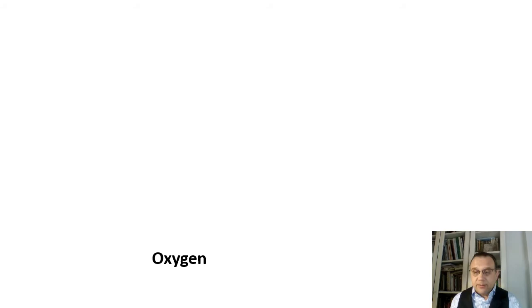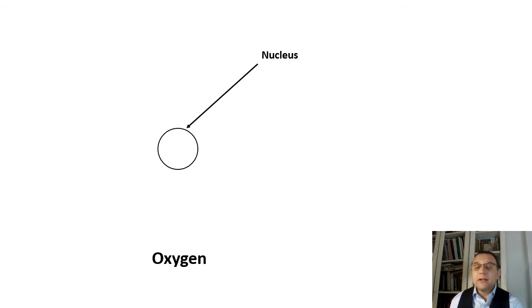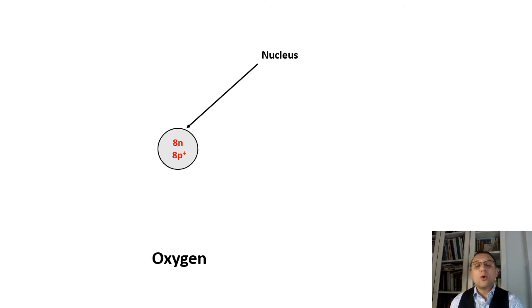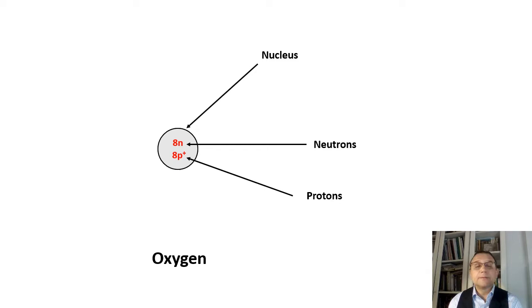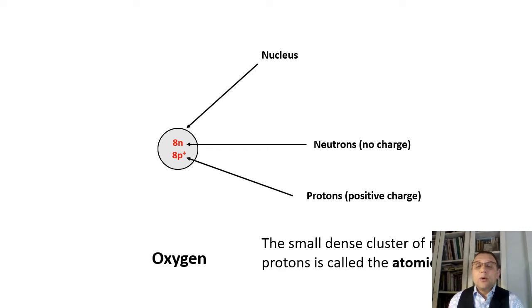The atom of oxygen, like any other atom, has a nucleus — we will shade it gray. The nucleus is made of two subatomic particles: neutrons and protons. Neutrons are neutral — the word speaks for itself. Protons are particles that carry a positive charge. The small dense cluster of neutrons and protons is called the atomic nucleus.